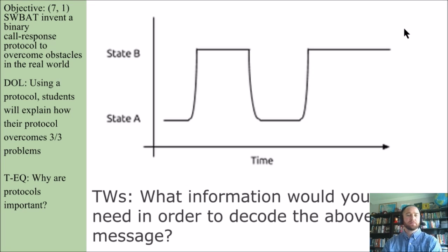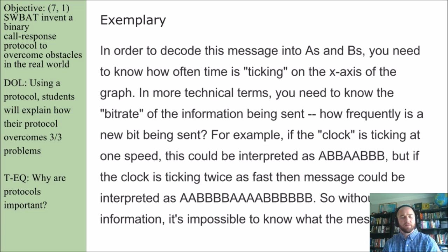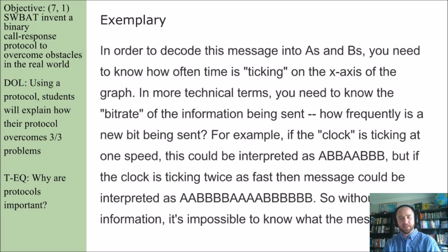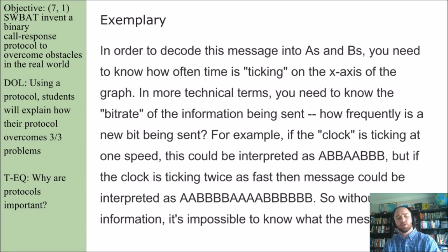Now that you're done doing that, you should be able to answer a question like this: What information would you need in order to decode the above message? Here is an exemplary response: In order to decode this message into As and Bs, you need to know how often time is ticking on the x-axis of the graph. In more technical terms, you need to know the bit rate of the information being sent — how frequently is a new bit being sent? For example, if the clock is ticking at one speed, this could be interpreted as A-B-B-A-A-B-B-B. But if the clock is ticking twice as fast, then the message could be double that. So without that information, it's impossible to know what that message is.